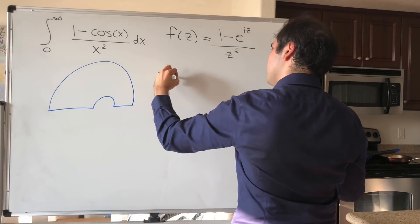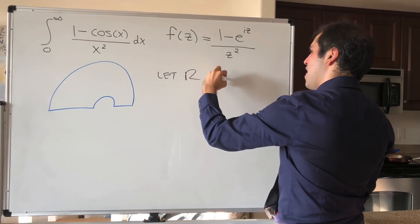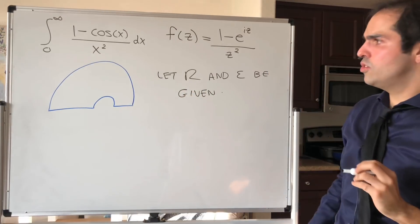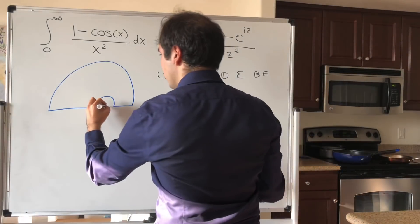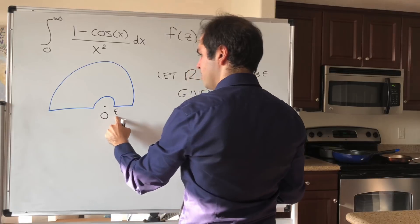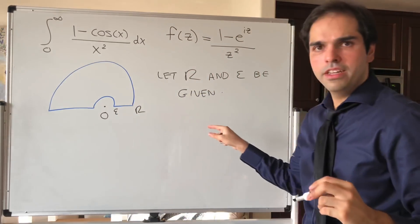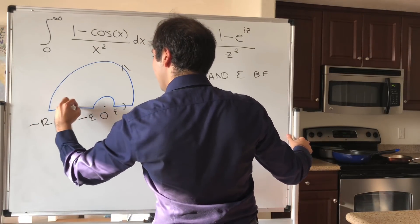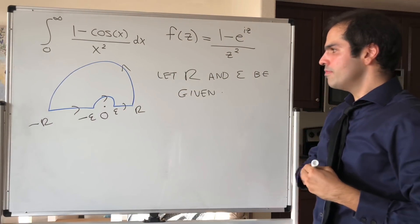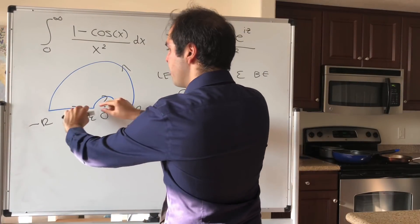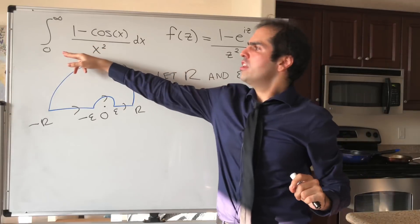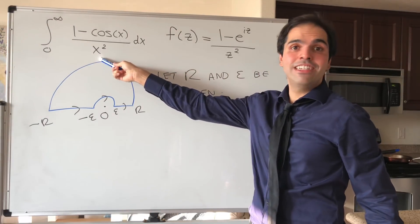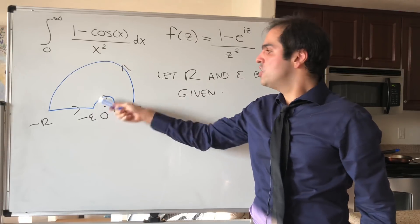So let capital R, which is a very big number, and epsilon, which is a very small number, be given. Then we would like to evaluate the integral of f over this contour, where it starts off at epsilon, goes all the way up to R on the real line, then goes in a half circle up to minus R, then goes back to minus epsilon, and lastly does this little jump. We need R to be very big to eventually give us the integral from minus infinity to infinity, and the function has a singularity at zero, so this contour effectively jumps over the singularity.